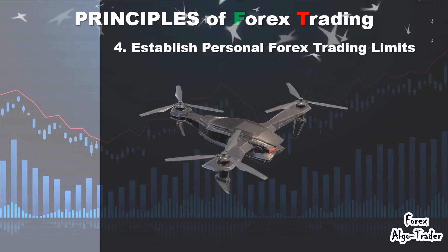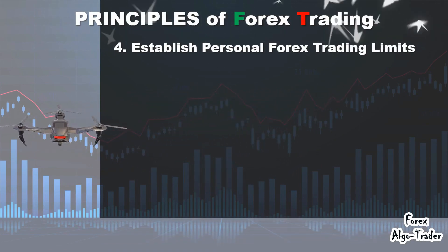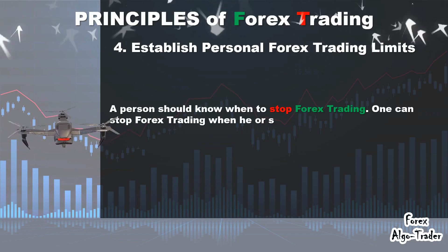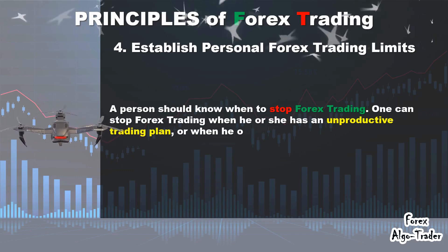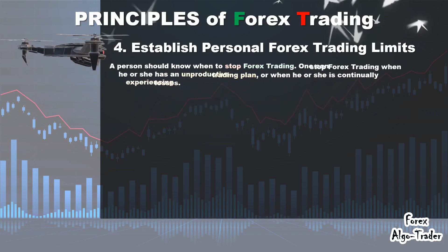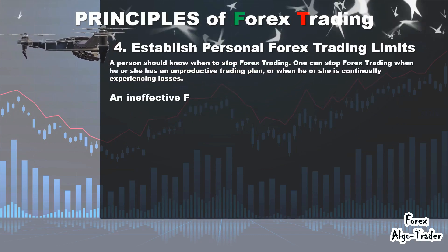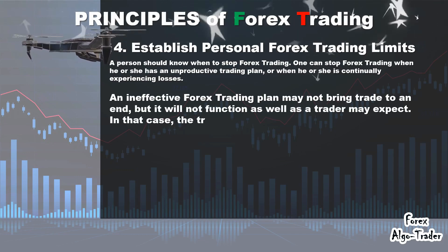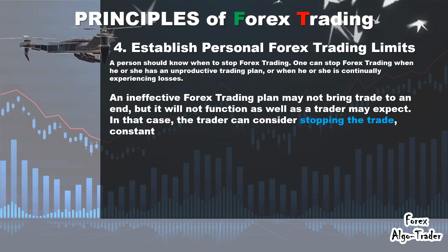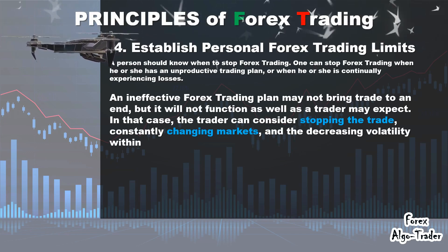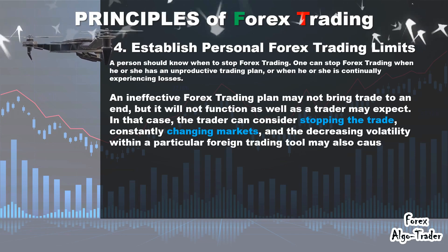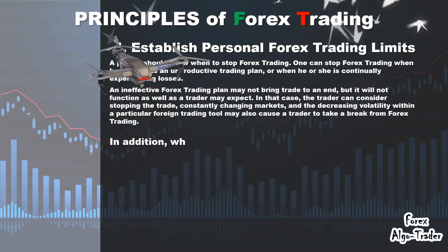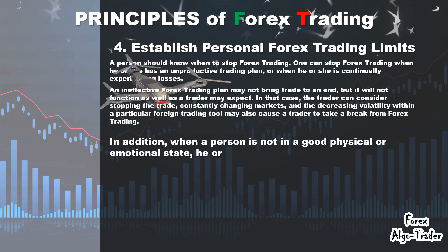4. Establish Personal Forex Trading Limits. A person should know when to stop forex trading. One can stop forex trading when he or she has an unproductive trading plan, or when he or she is continually experiencing losses. An ineffective forex trading plan may not bring trade to an end, but it will not function as well as a trader may expect. In that case, the trader can consider stopping the trade. Constantly changing markets and decreasing volatility within a particular foreign trading tool may also cause a trader to take a break. In addition, when a person is not in a good physical or emotional state, he or she may want to think about taking a break to deal with personal issues.